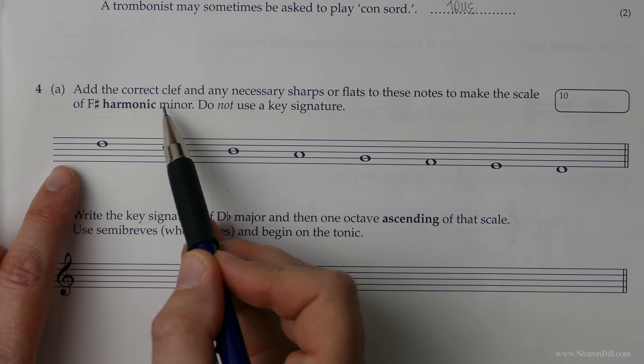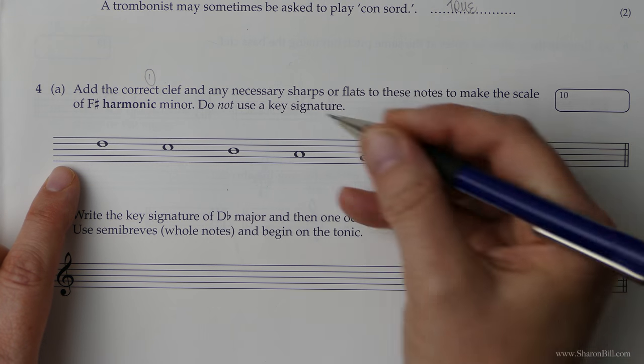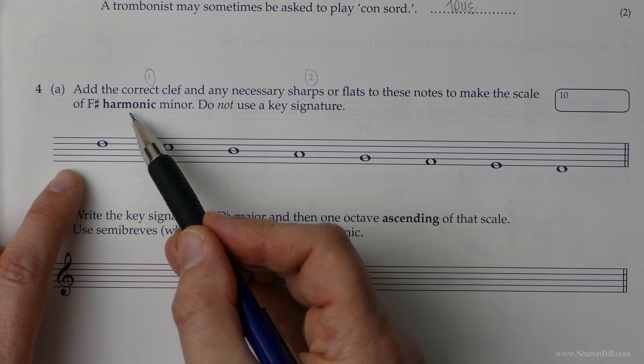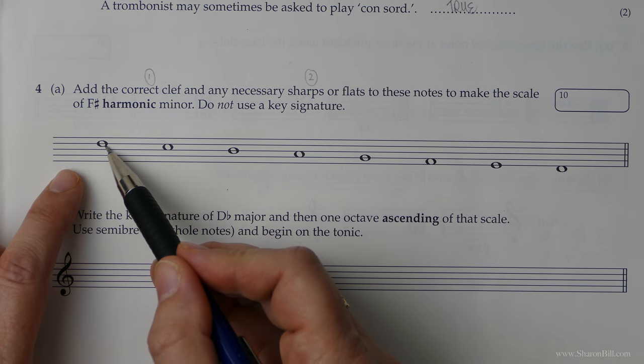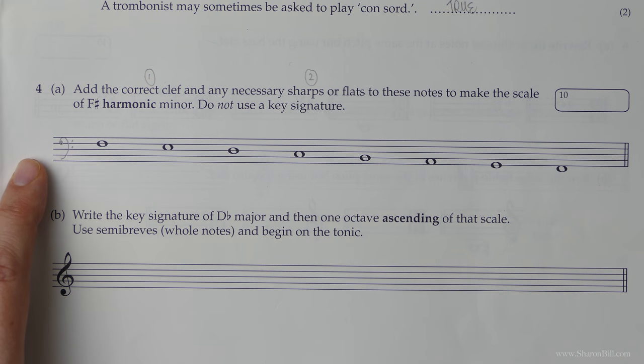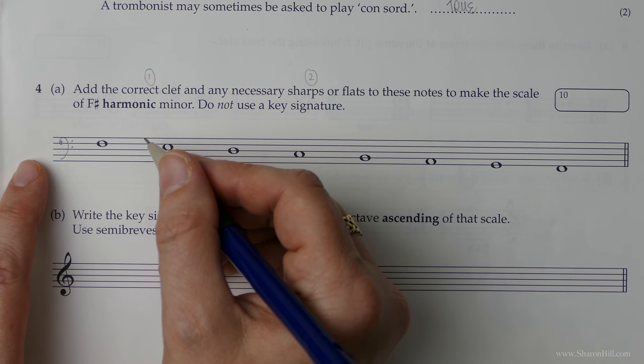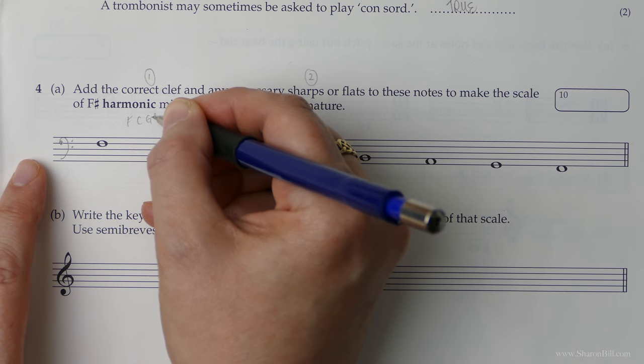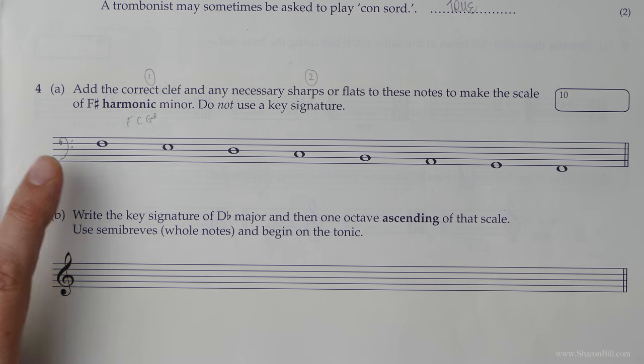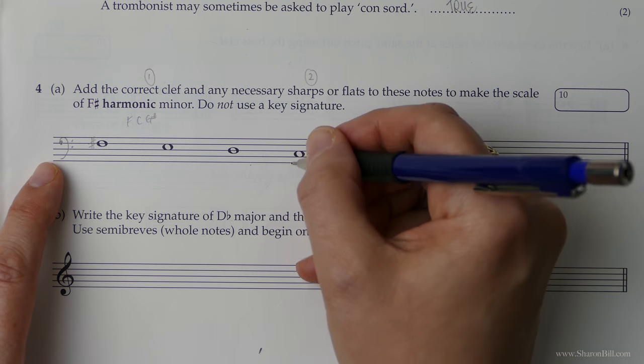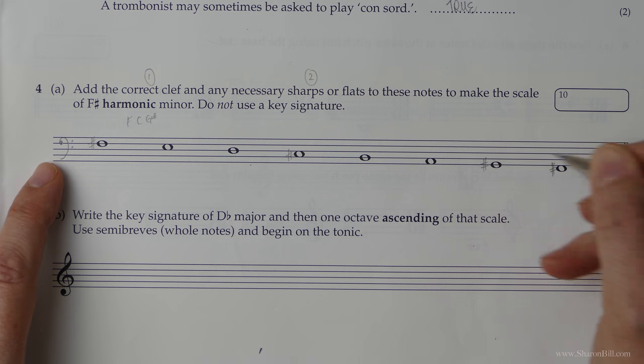It asks us to add the correct clef and any necessary sharps or flats. Don't use a key signature, we're using accidentals. For F sharp minor to begin and end on F sharp, this would need to be in the bass clef. If we wrote any other clef, it wouldn't be accurate. Now F sharp minor is related to A major, which has got F, C, G sharps. So we can do that straight away. Remember the F sharp comes twice, once at the beginning, once at the end. And then there's our C sharp and G sharp.